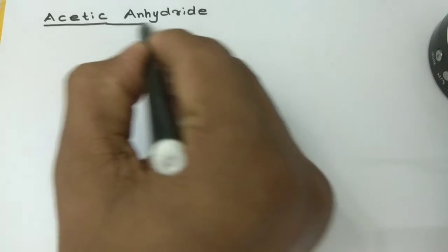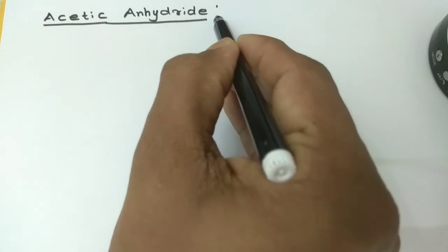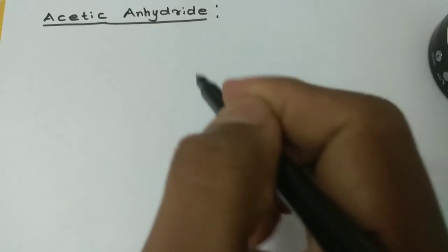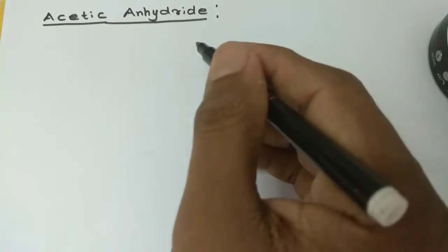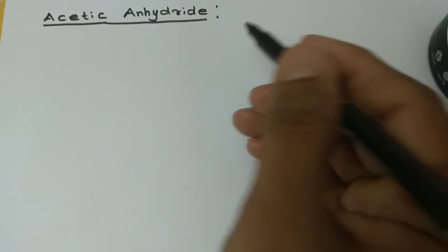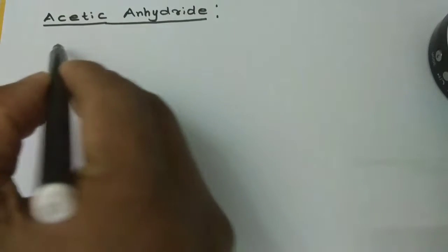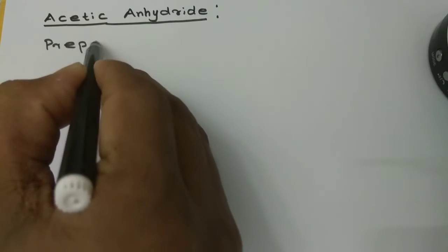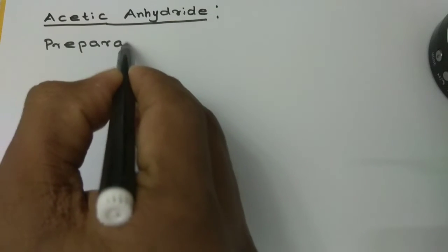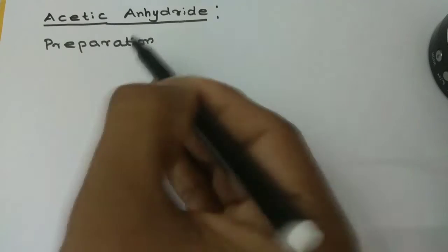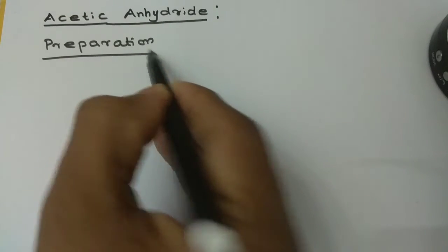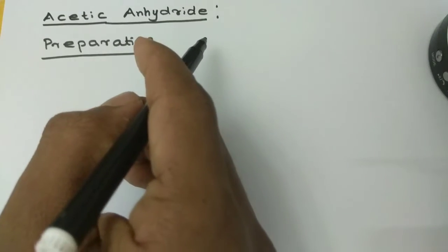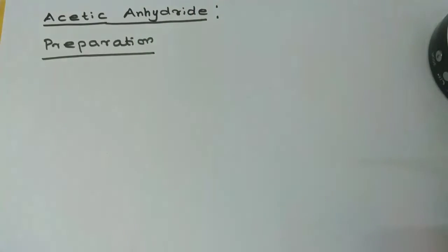We are going to discuss the Carboxylic Acid — Acetyl Anhydride methods of preparation. We will discuss Acetic Anhydride preparation.